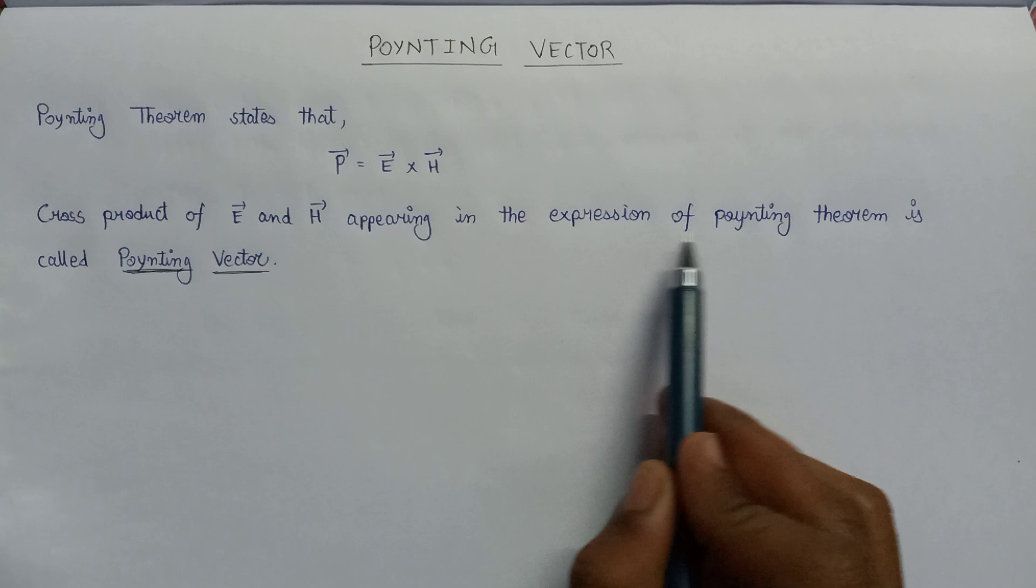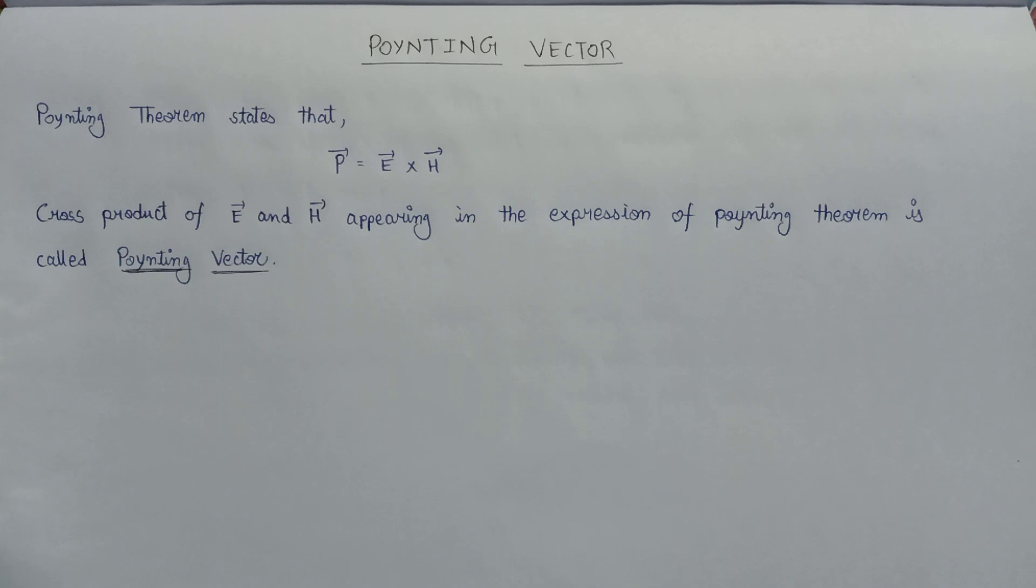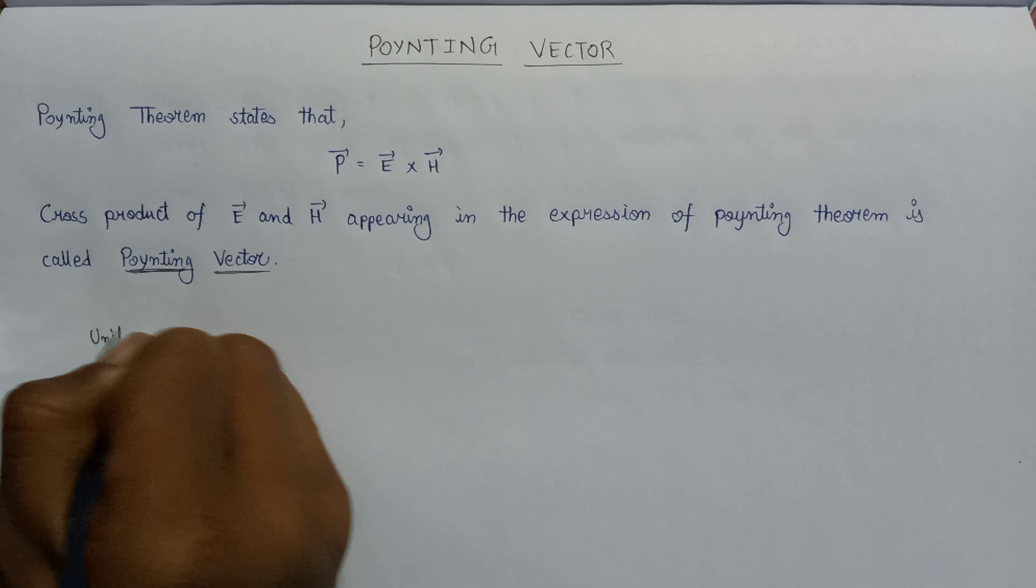So the cross product of E cross H appearing in the expression of Poynting theorem is Poynting vector only. If we talk about the power of this Poynting vector, then it is defined as a power per unit area.